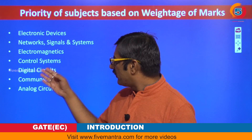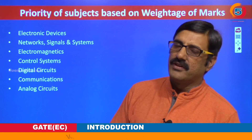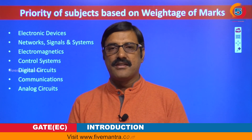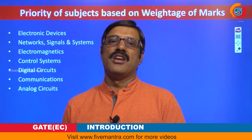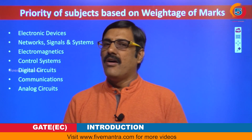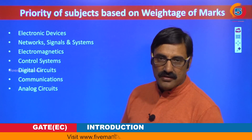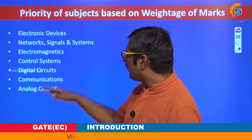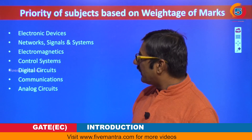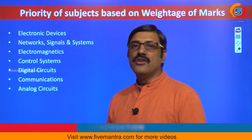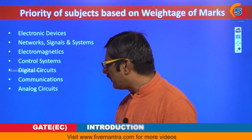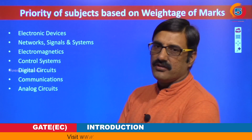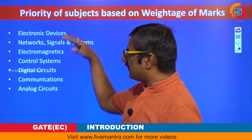For communications — covering amplitude modulation, frequency modulation, shifting techniques like MSK, QSK, PSK, ASK, and encoding/decoding of cyclic codes and convolution codes — this forms the sixth priority. Lastly, the lowest preference should be given to analog circuits. This concludes the small introduction about what is GATE and how the subjects and weightages of electronics and communications are distributed.